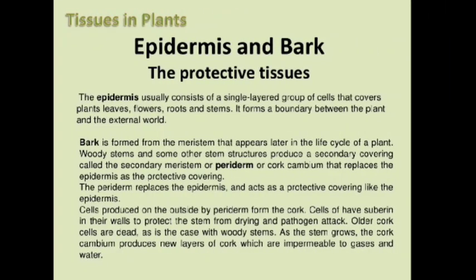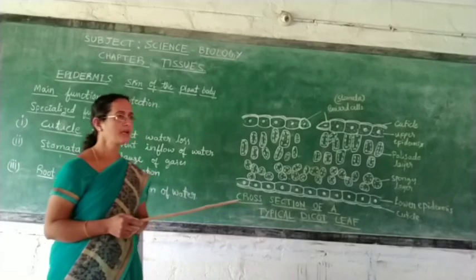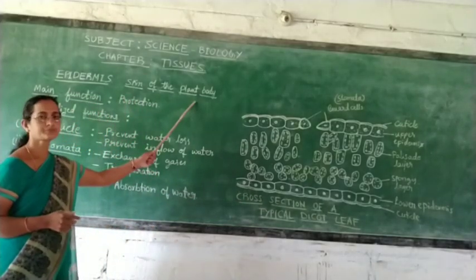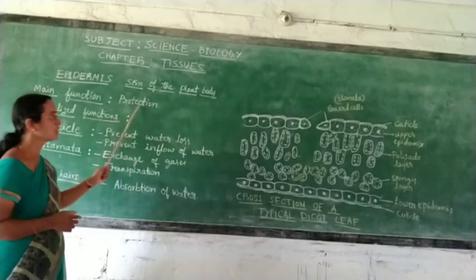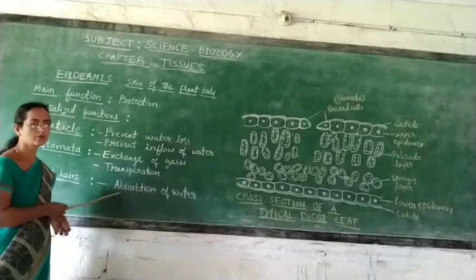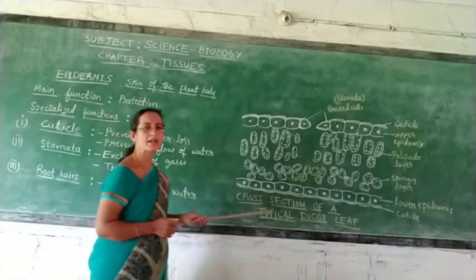Now let us study a special plant tissue called epidermis. Epidermis is called a protective tissue which protects the plant — otherwise it is called the skin of the plant. Its main function is to give protection to the plant, and it has some modified functions also. Let us see the structure of epidermis.